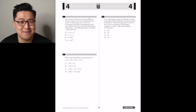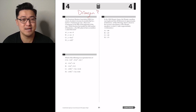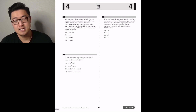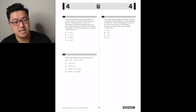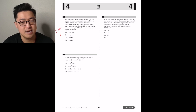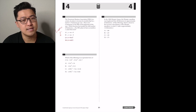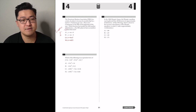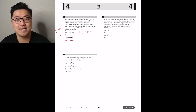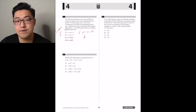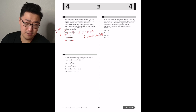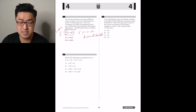The downtown business association plans to increase its membership by N businesses per year. There are B businesses at the beginning of the year. Which function best models the total number of businesses Y the DBA plans to have X years from now? This is a linear equation — not exponential. If zero years have passed, we should have B. Plugging zero into answer choice B gives negative B, which contradicts the story. So the answer is A.